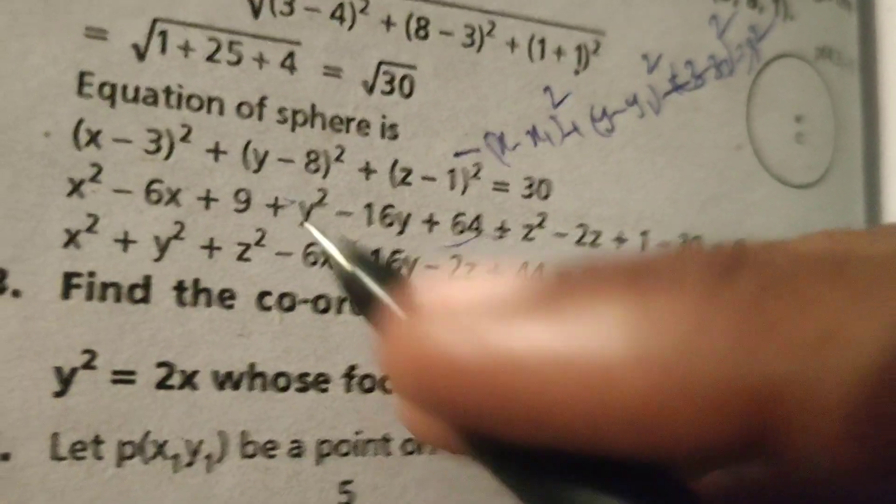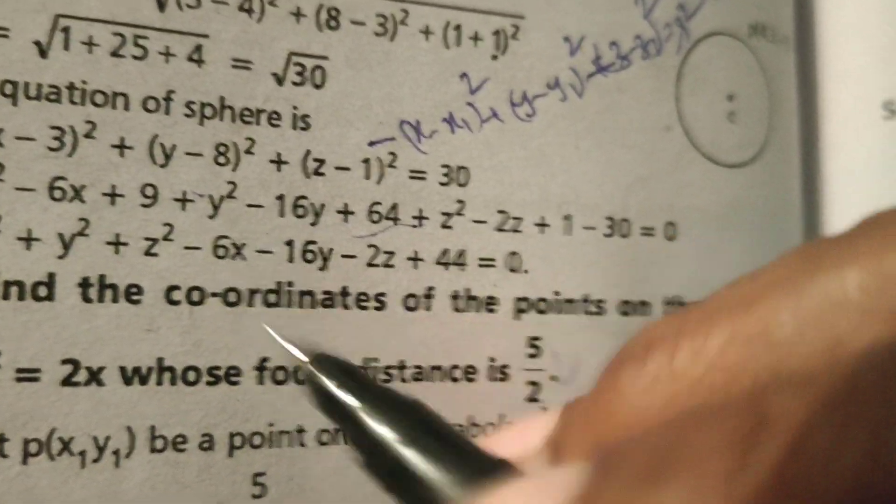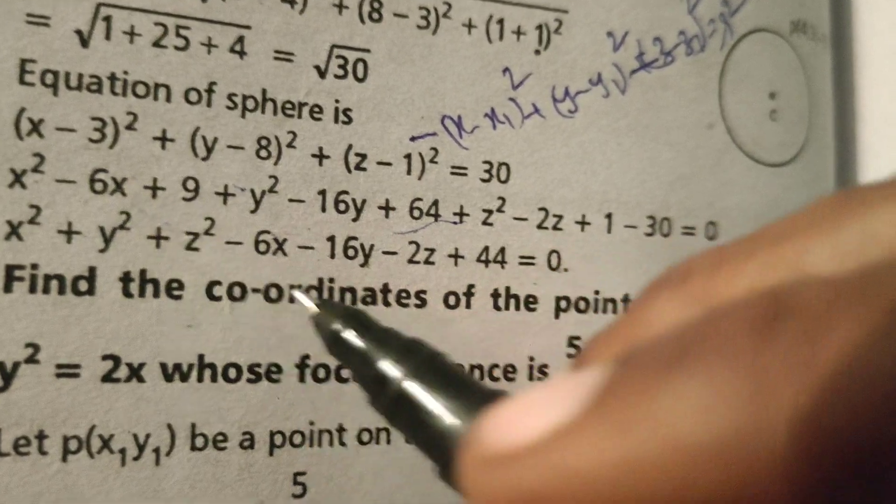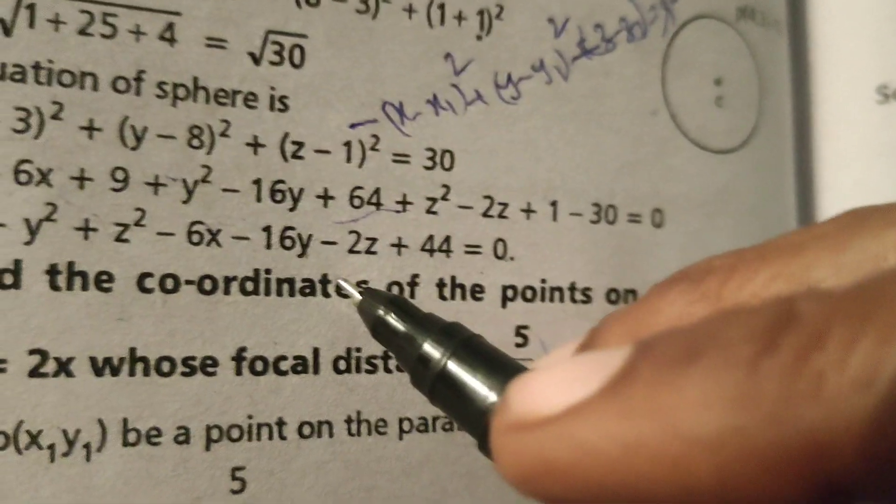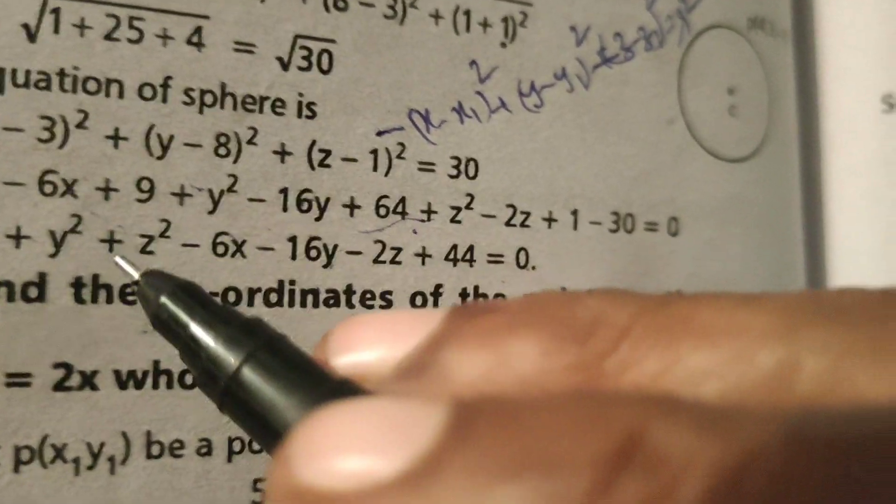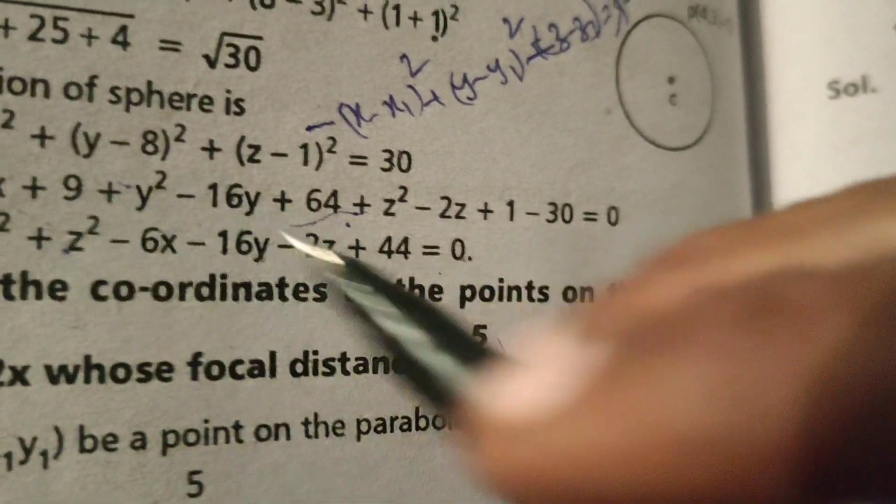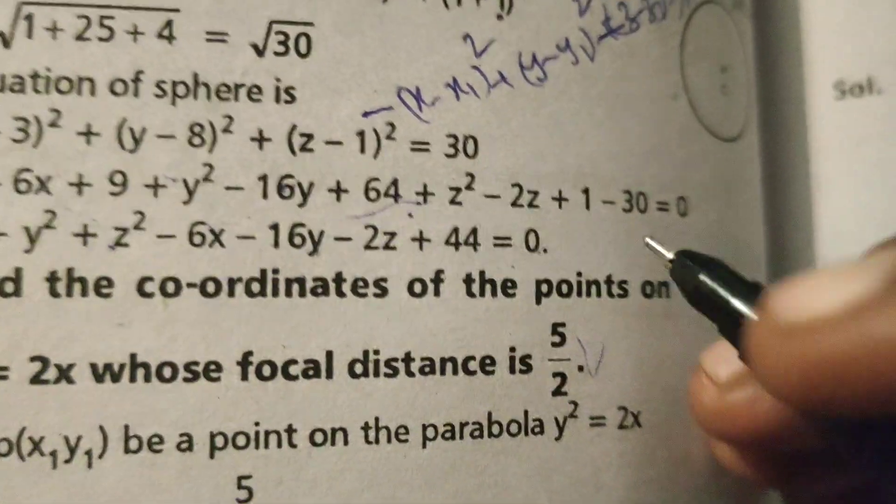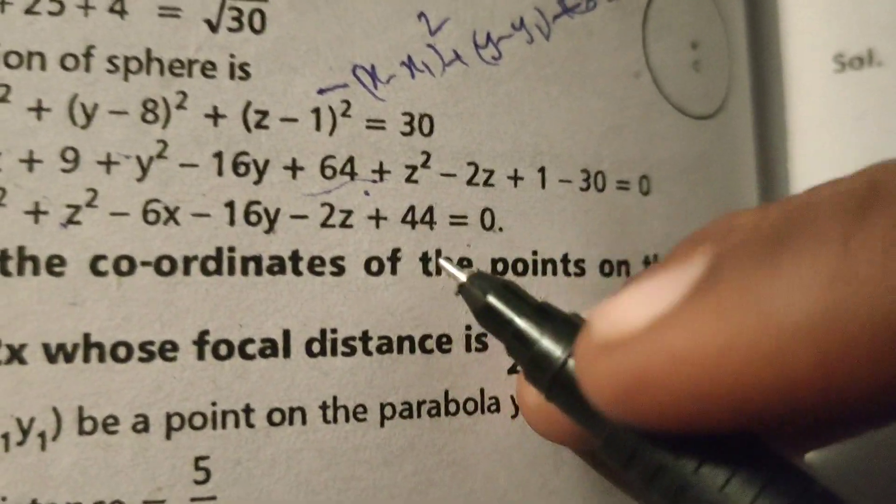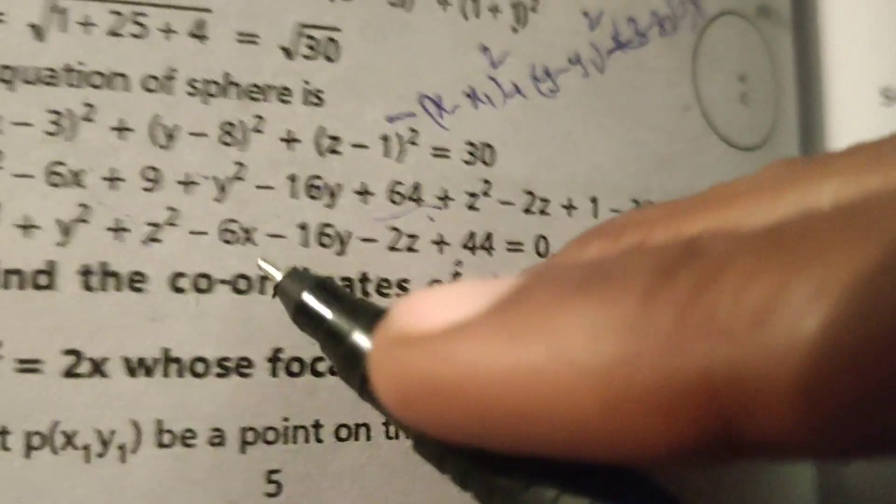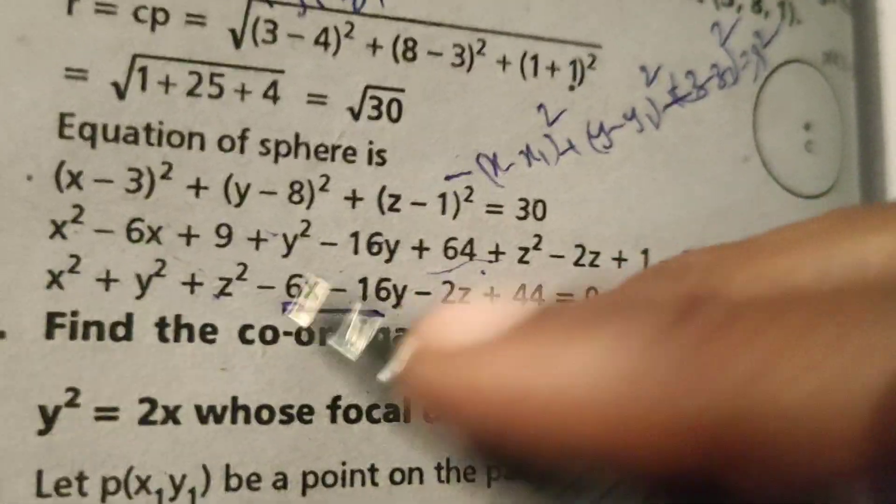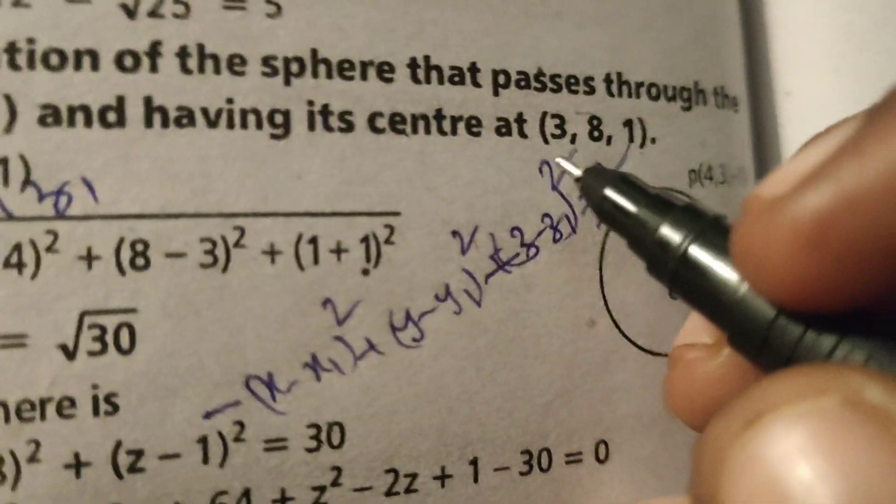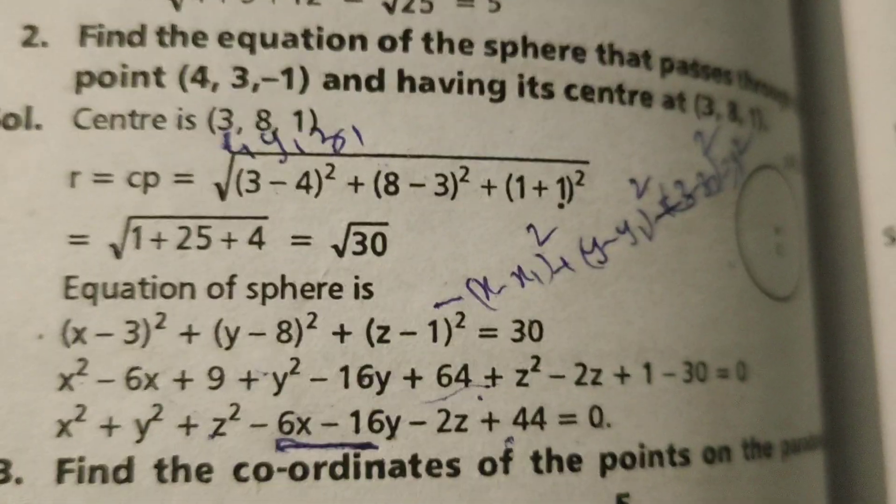Transpose to left-hand side: x² + y² + z² - 6x - 16y - 2z. Here 64 + 9 + 1 equals 74, minus 30 equals 44. Therefore x² + y² + z² - 6x - 16y - 2z + 44 = 0. This is the equation of the sphere passing through the given point with center (3, 8, 1). Thanks.